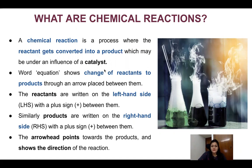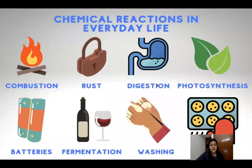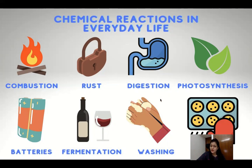Chemical reactions are everywhere. You are cooking — that is a chemical reaction. You take some raw material, give it heat, and a different product forms. Similarly, respiration is also a chemical reaction. Combustion — that's when something burns. Rust — if you leave iron nails or locks in your house for a long time, you can see rust forming. That brown color is also a chemical reaction. If you eat food, it's digested — that is also a chemical reaction. Photosynthesis — plants are making food — that is also a chemical reaction.